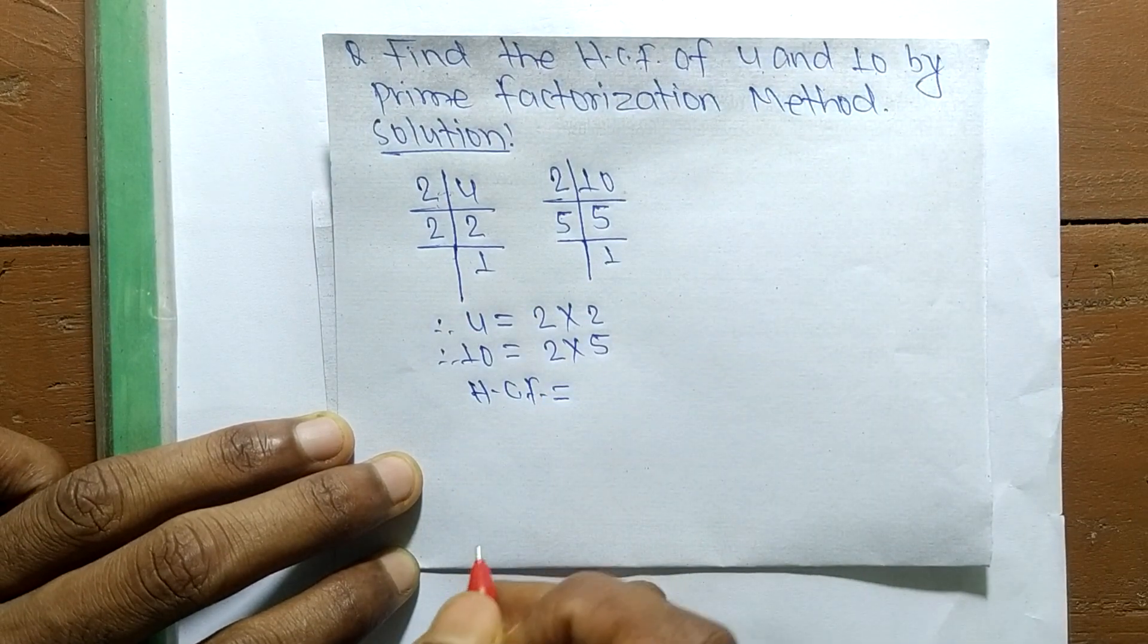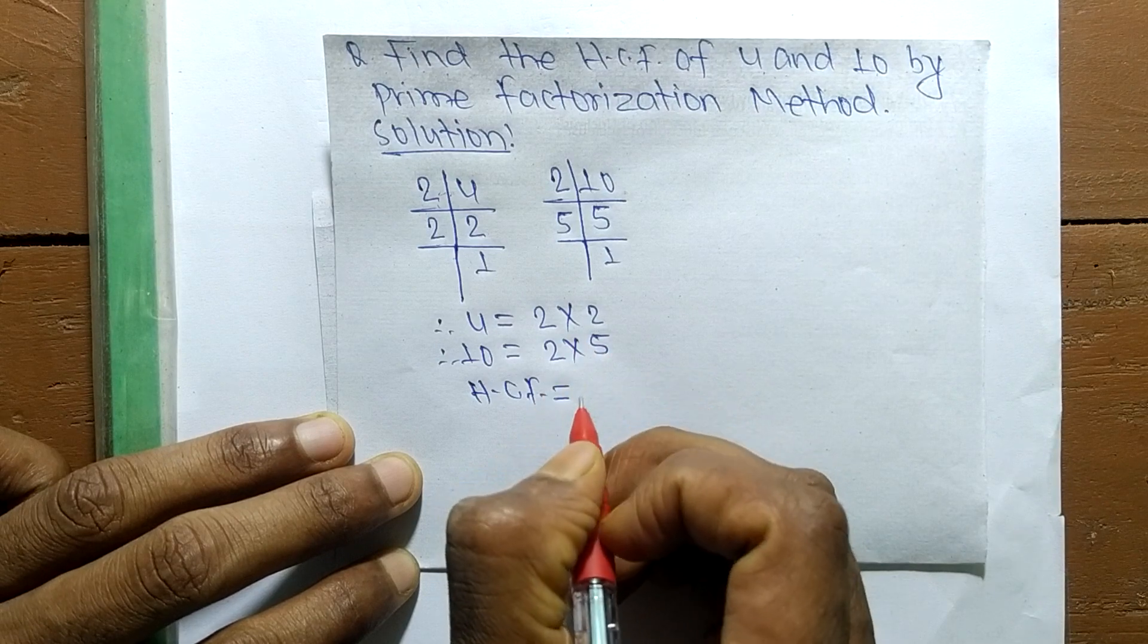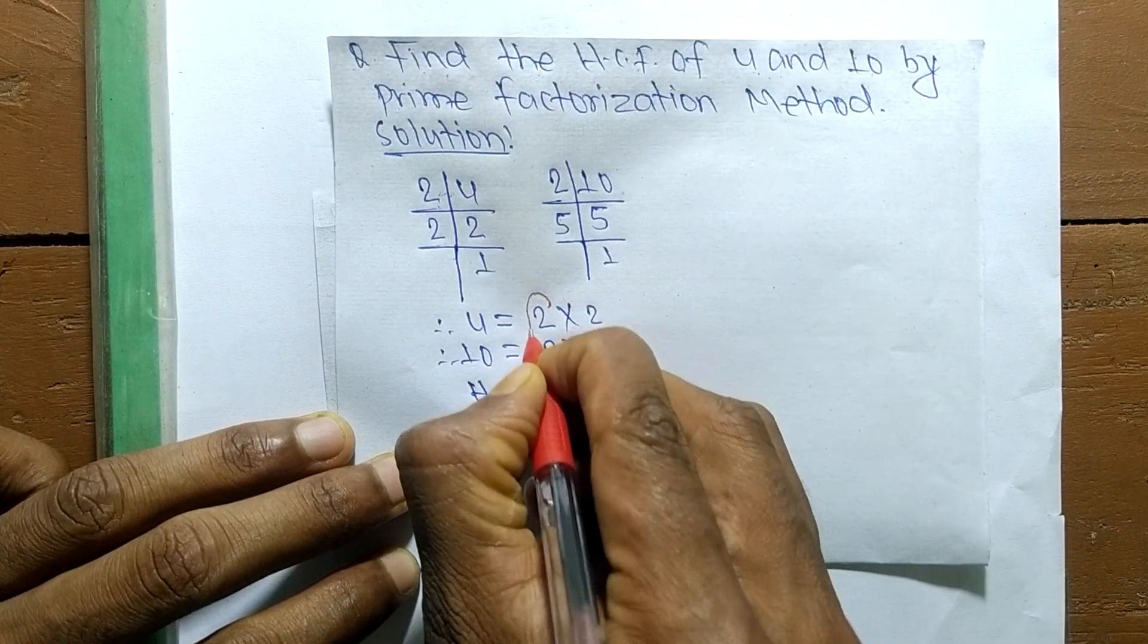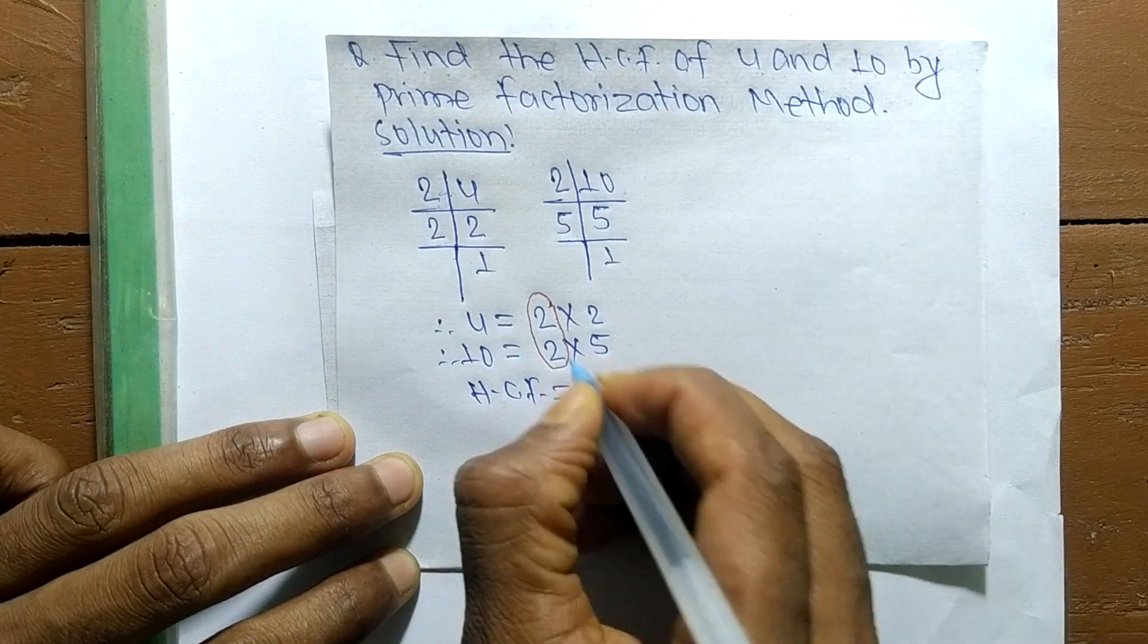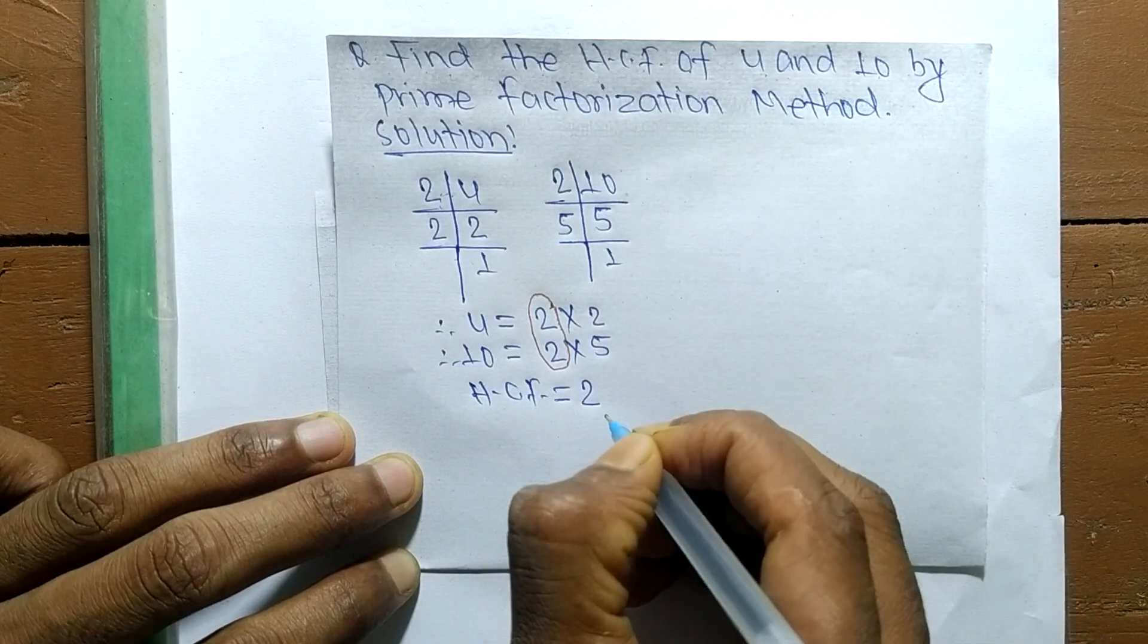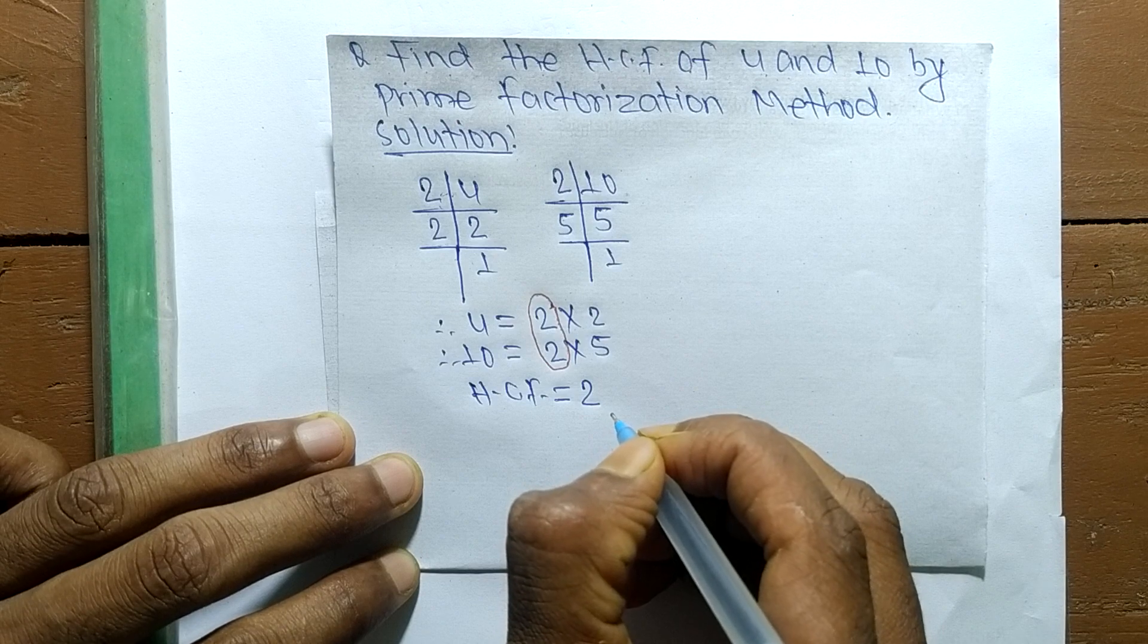Now we have to find out the common elements in all these prime factors. So the first common element here is 2, so its HCF is equal to 2. So this much for today and thanks for watching.